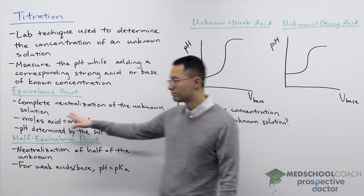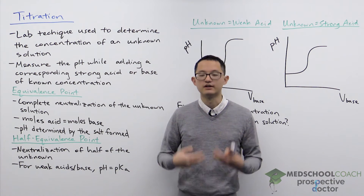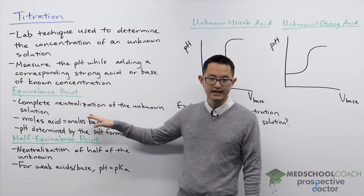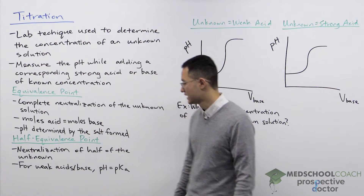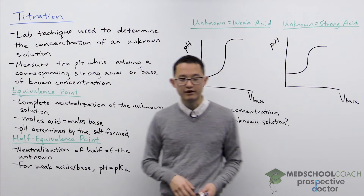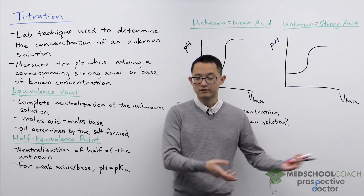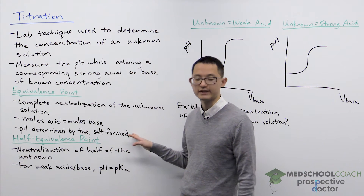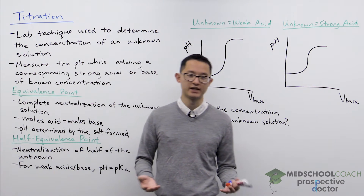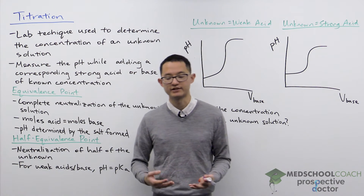The equivalence point occurs when you have complete neutralization of the unknown solution. You can calculate the concentration or volume of the unknown solution using the equation N_A V_A C_A = N_B V_B C_B. At complete neutralization the moles of acid equal the moles of base, and what you're left with is salt and water. Water is neutral, so the pH at the equivalence point is determined by the salt formed: a neutral salt gives pH 7, an acidic salt gives pH less than 7, and a basic salt gives pH greater than 7.